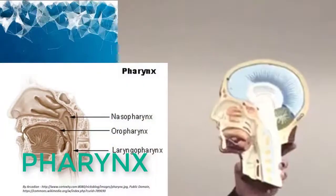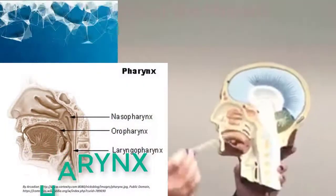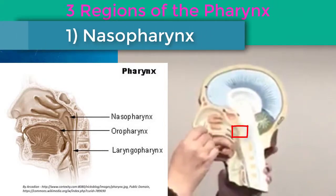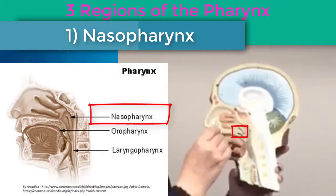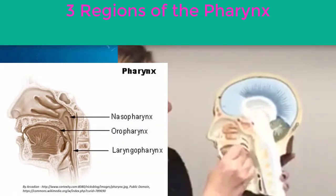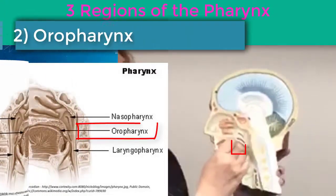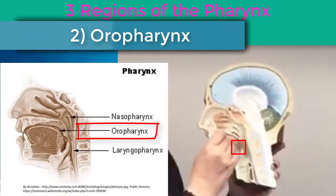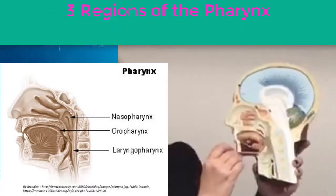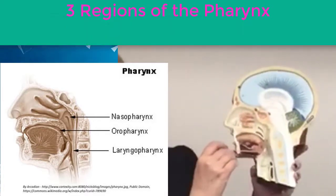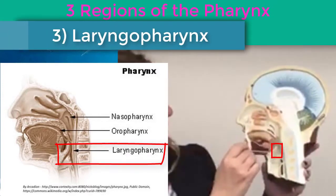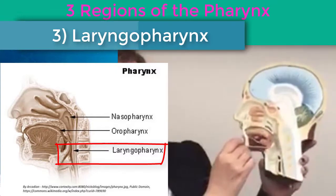The pharynx has three different regions. The area at the top that is associated with the nose or the nasal cavity — that is your nasopharynx. At the back of the oral cavity you have the oropharynx. And then traveling down a little bit further, close to where it branches off into the trachea and the esophagus, this area of the pharynx is called the laryngopharynx.